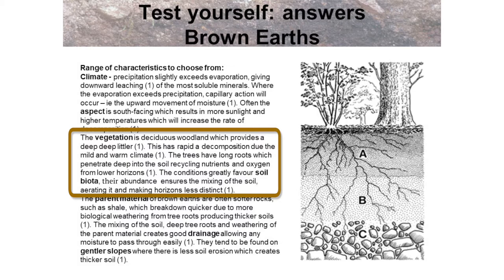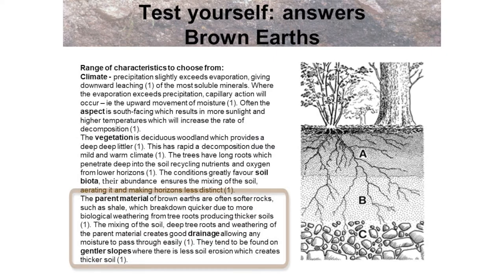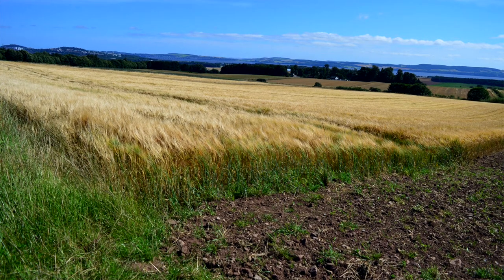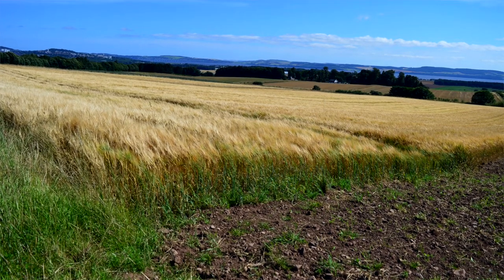The trees have long roots which penetrate deep into the soil, recycling nutrients and oxygen from lower horizons. The conditions greatly favour soil biota; their abundance ensures the mixing of the soil, aerating it and making the horizons less distinct. The parent material of brown earths is often softer rocks such as shale, which break down quicker due to more biological weathering from tree roots, producing thicker soils. The mixing of the soil, deep tree roots and weathering of the parent material creates good drainage. Brown earths tend to be found on gentler slopes where there is less chance of soil erosion, creating thicker soil.